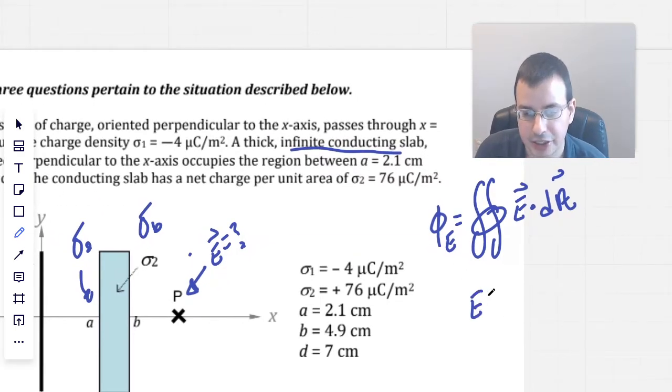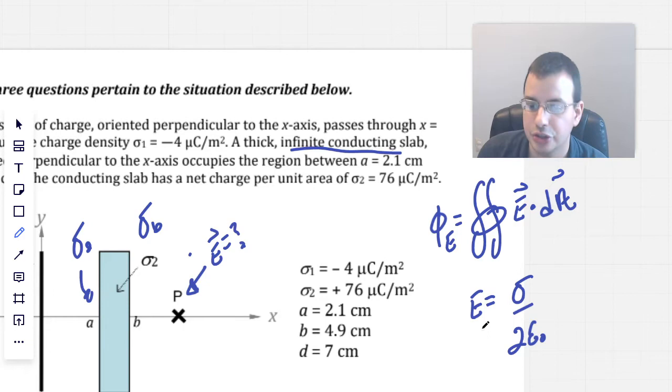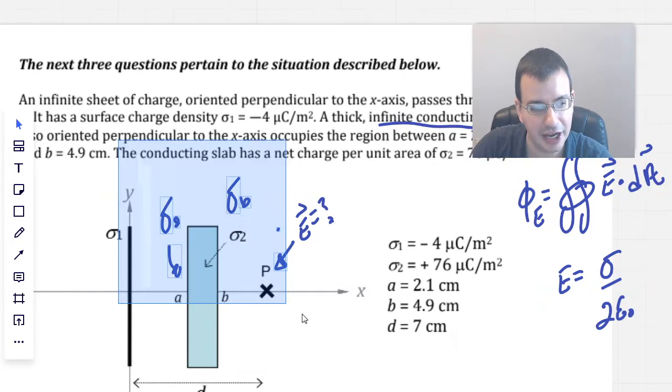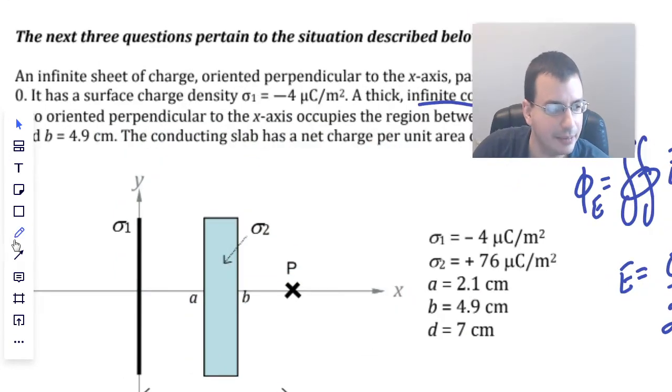Long story short, you do this for an infinite slab and you basically will get the same answer every time. And you can memorize that the electric field due to an infinite plane, the magnitude is going to be the surface charge density over 2 epsilon not. And one of the key things to think about this is that it's independent of distance from the surface.